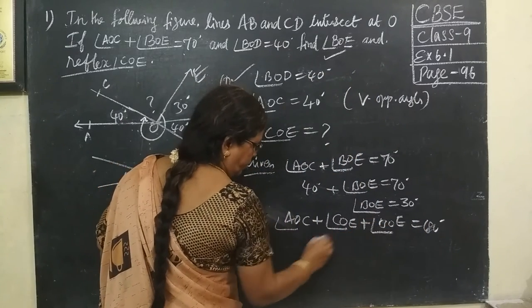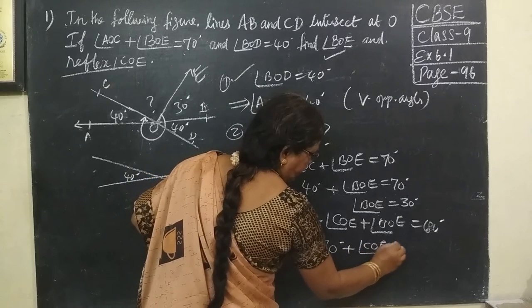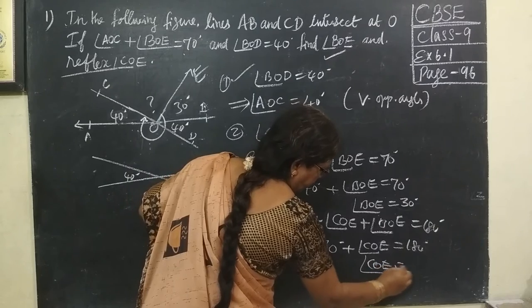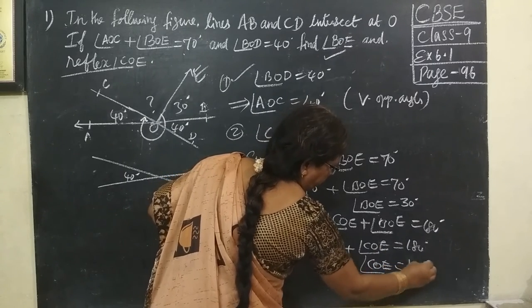Or, you can, by combining this, you can write 70 degrees. Then, COE. Because it is given in the question itself, it is given. Therefore, angle COE equal to 180 minus 70. So, 110.